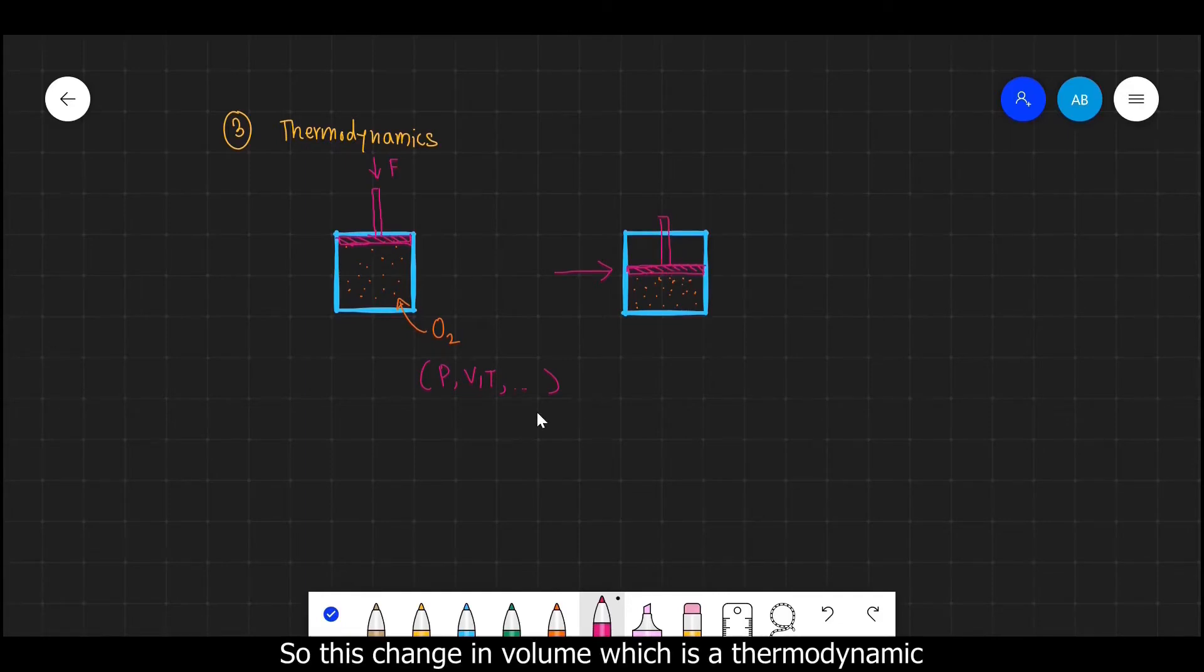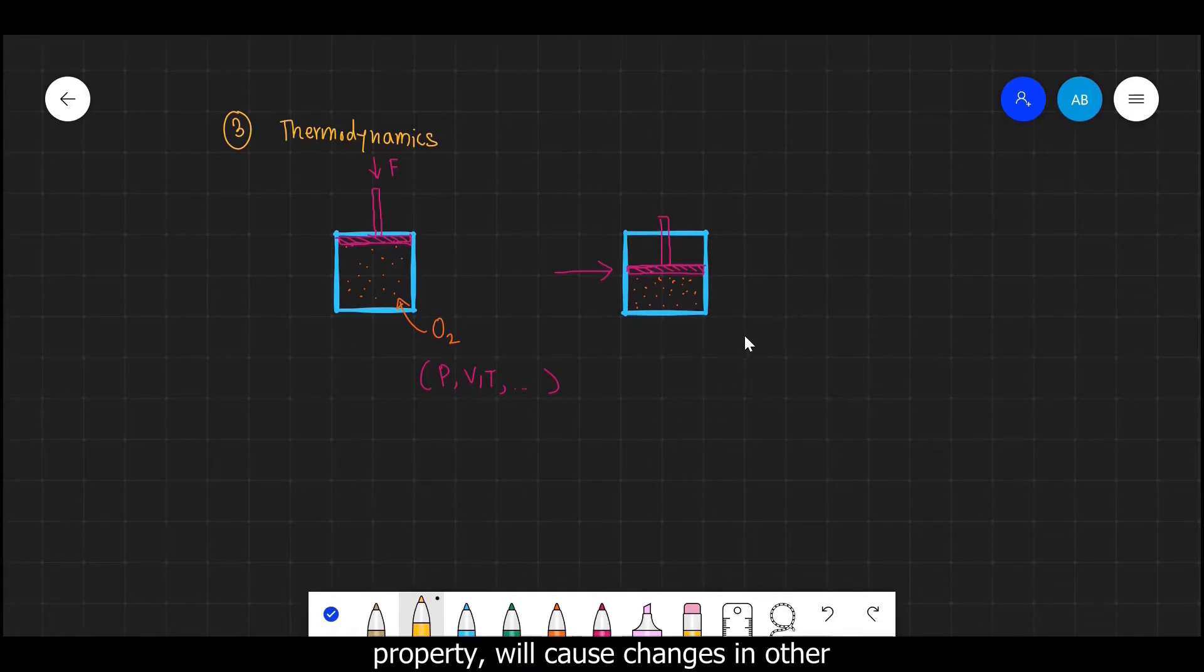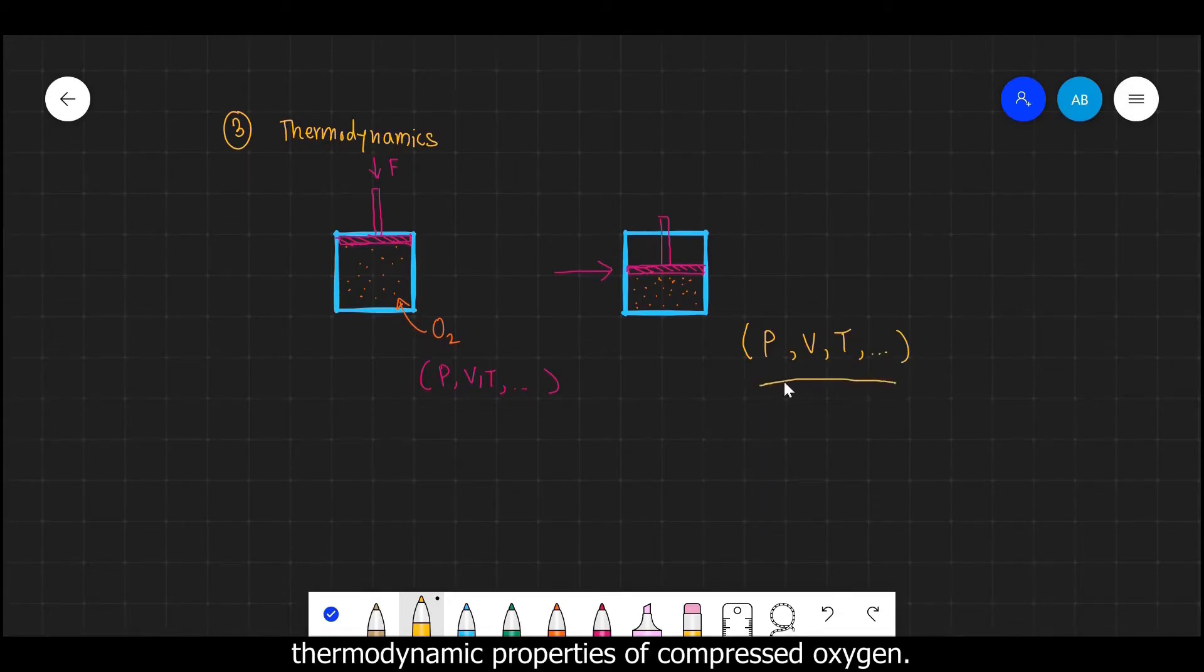And so this will compress this oxygen gas into half of its volume like this. So this change in volume, which is a thermodynamic property, will cause changes in other thermodynamic properties such as pressure, temperature, etc. And now using the laws of thermodynamics, we can predict this new thermodynamic properties of this compressed oxygen.